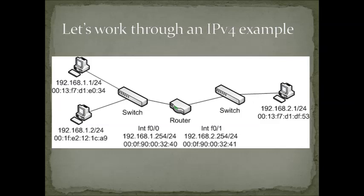In this particular topology, we've got two networks: the 192.168.1.0 network and the 192.168.2.0 network. They're separated by a router in the middle. The hosts on the 1.0 network are 1.1, 1.2, and the router interface is 1.254. On the other side, we've got 2.1 and 2.254 as the router interfaces.